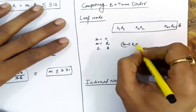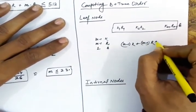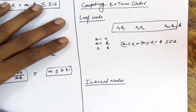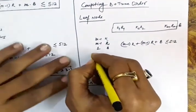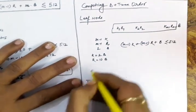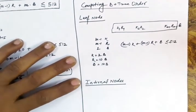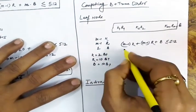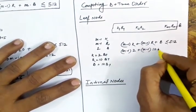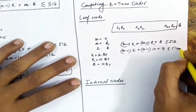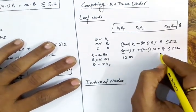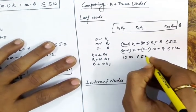So: (m-1) key values plus (m-1) record addresses plus one block address is less than or equal to 512. If we put in example values — every key of 2 bytes, record addresses of 10 bytes, block addresses of 14 bytes — then: (m-1)×2 + (m-1)×10 + 14 ≤ 512, which gives us 12m ≤ 510.